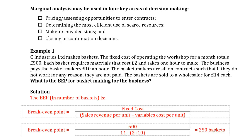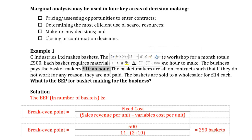Before I start, let me repeat the break-even point example. Let's say we have a company that makes baskets. The fixed cost of operating the workshop for a month totals £500. Each basket requires material that costs £2 and takes one hour to make. The business pays the basket maker £10 an hour, and basket makers are on contract such that if they don't work for any reason, they are not paid.